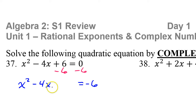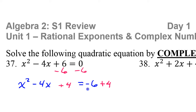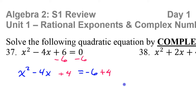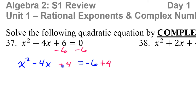Now we're going to do half the middle squared. Half of 4 is 2, and 2 squared is 4. So I'm going to put a 4 here to complete the square. But I have to put it on both sides — if you add something, you have to add it to both sides to make sure the equation is still balanced. Remember to not just add 4 on the left but also on the right. That's a common mistake.